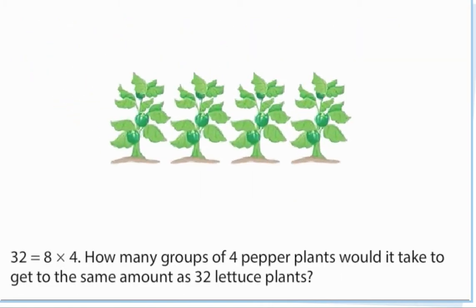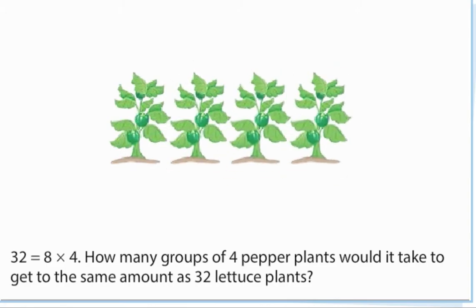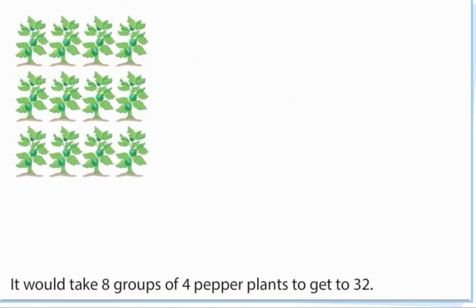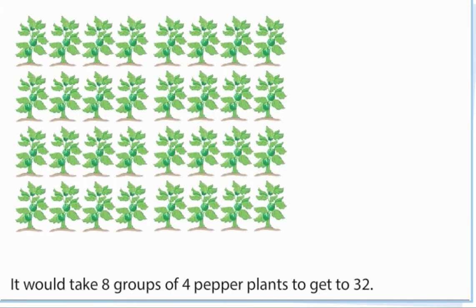How many groups of four pepper plants would it take to get to the same amount as 32 lettuce plants? It would take eight groups of four pepper plants to get to 32.